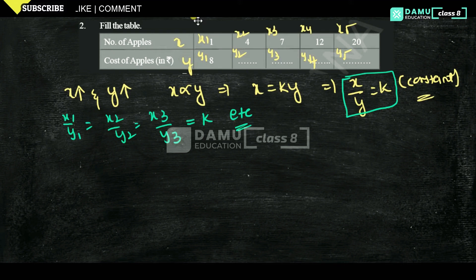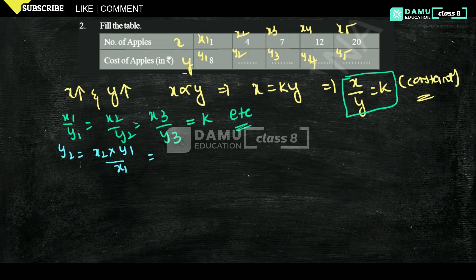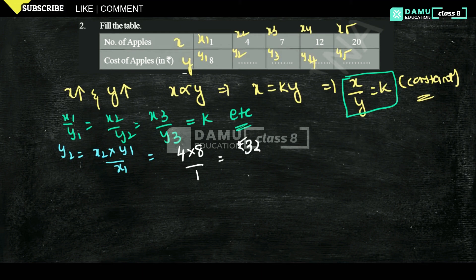If you want to find y2, you can write y2 = x2 times y1 by x1. For direct proportion, the number of apples increases like that. Let's take x1 = 1, x2 = 4, y1 = 8. So y2 = 4 times 8 by 1 = 32 rupees.